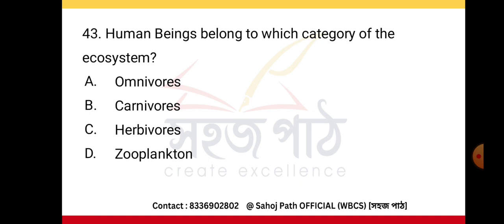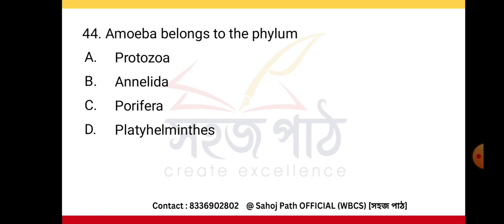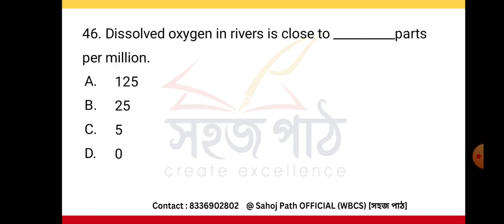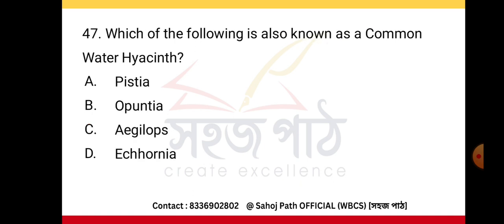Human beings belong to the omnivorous category of the ecosystem. Amoeba belongs to the phylum Protozoa. Diabetes is caused by low production of insulin. Dissolved oxygen in rivers is close to five parts per million. Which of the following is also known as a common water hyacinth? Eichhornia.